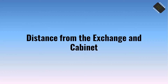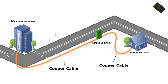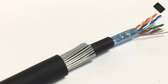Distance from the exchange and cabinet. Both ADSL and FTTC are transmitted to your home from the telephone exchange using the telephone network. For ADSL a copper wired cable connects the exchange to your street cabinet, and for FTTC a fibre optic cable is used. From the cabinet both these connections use a copper wired cable to connect to your home. Although this copper wiring is braided and shielded, it can still pick up line noise especially over long distances. This line noise interferes with signal quality and in turn reduces your broadband speed.